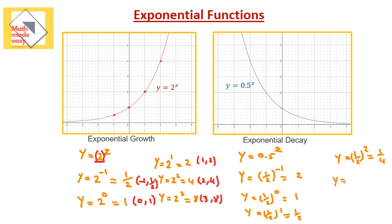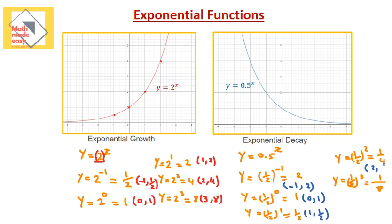When we have half to the power of 3, 1 to the power of 3 is 1, and 2 to the power of 3 is 8, so the answer is 1 over 8. Let's check all the points. When x was equal to negative 1, y was 2. x equal to 0, y was 1. x equal to 1, y was half. x equal to 2, y was 1 over 4. When x was equal to 3, y was equal to 1 over 8.